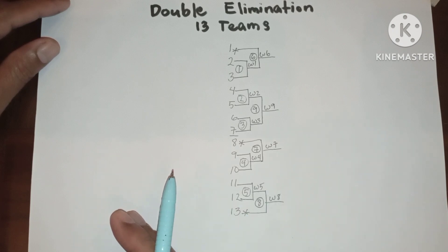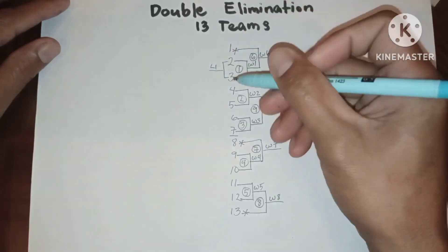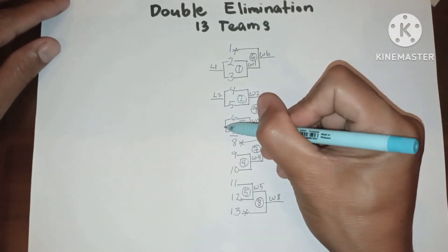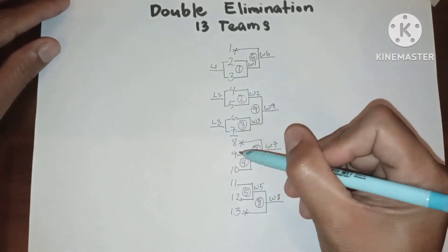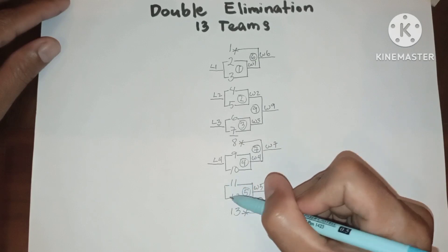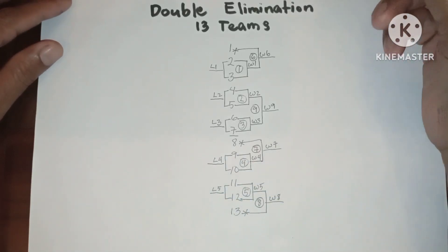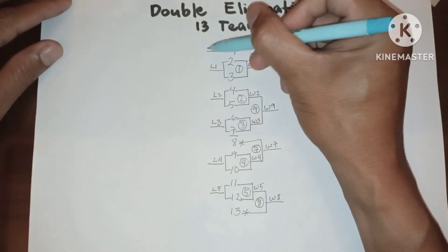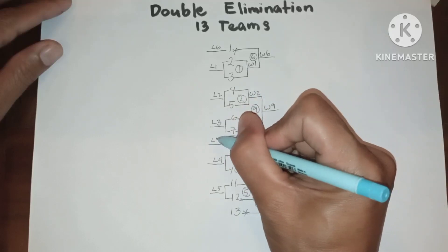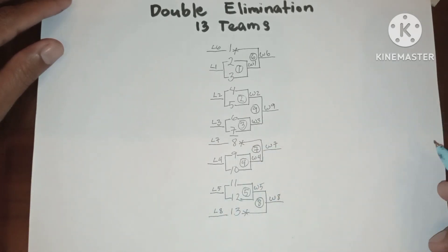Now let us proceed to the losers bracket. We have loser 1, loser 2, loser 3, loser 4, loser 5, loser 6, loser 7, loser 8. Now let them play.